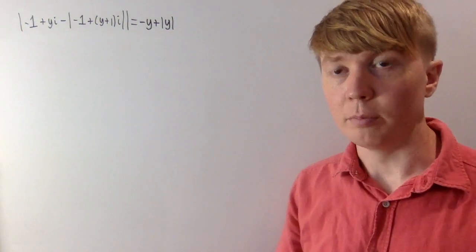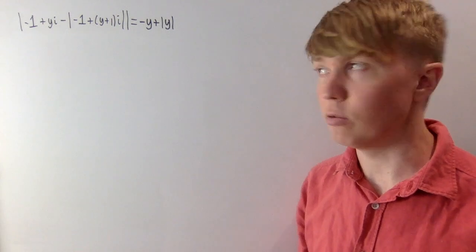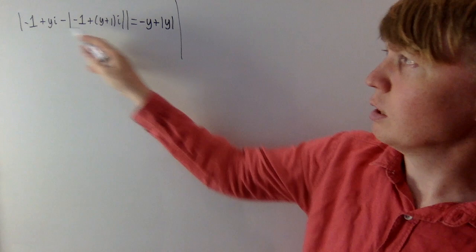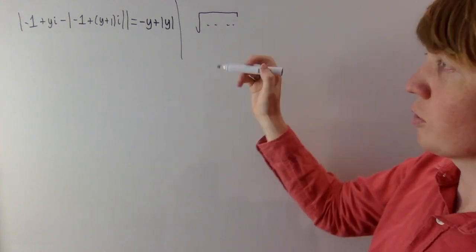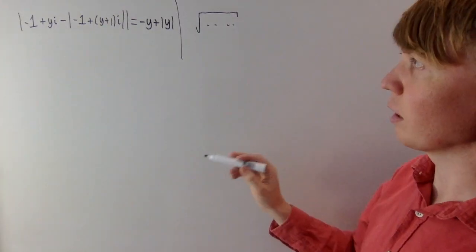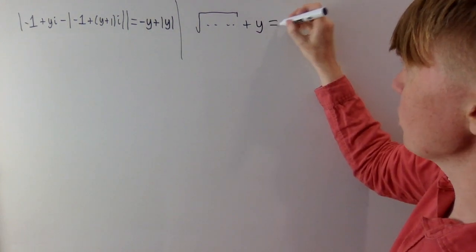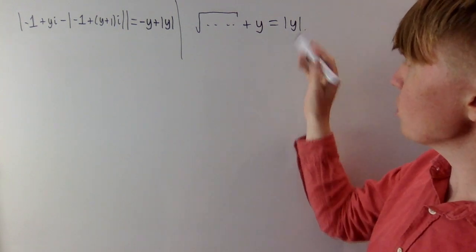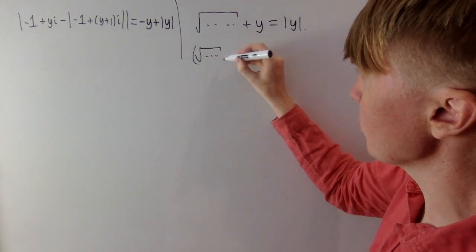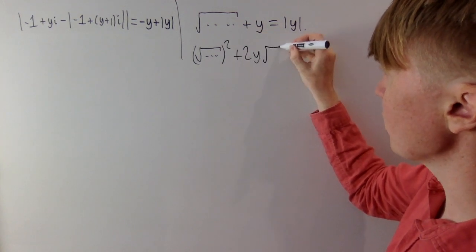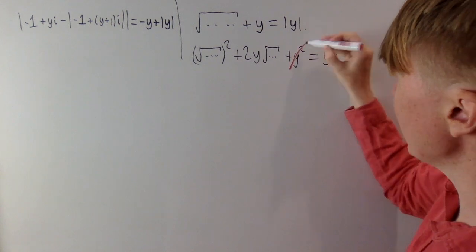We could brute-force the rest using the definition of the absolute value of complex numbers, but that makes the algebra quite tricky, so we'll take a more nuanced approach. We'll expand the absolute value on the left-hand side — informally, the square root of the real part squared plus the imaginary part squared. Adding y to the left-hand side, this absolute value plus y equals the absolute value of y. To handle the absolute value of y, we square both sides.